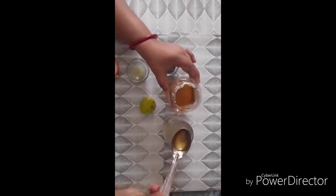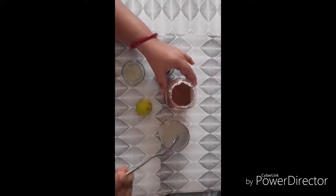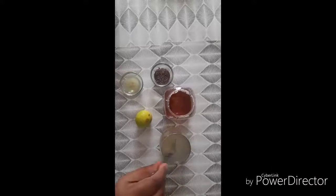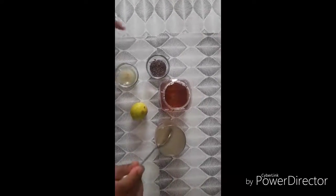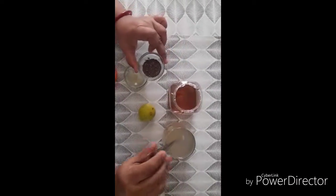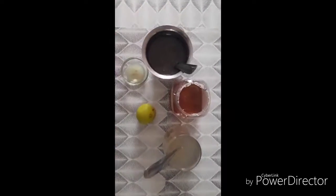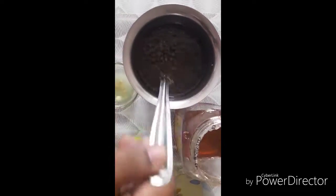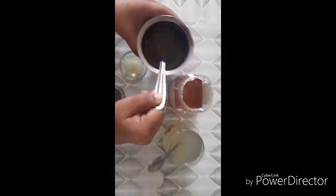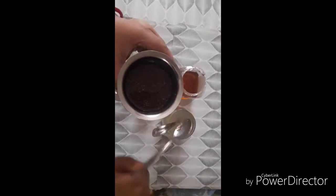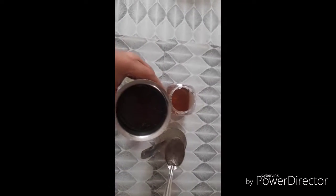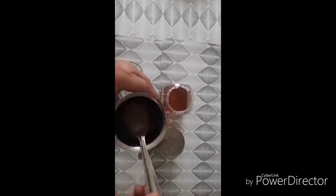Put 1 teaspoon full of chia seeds. Mix it for 10 to 20 minutes. I will add 2 to 4 spoons. I've added chia seeds now.